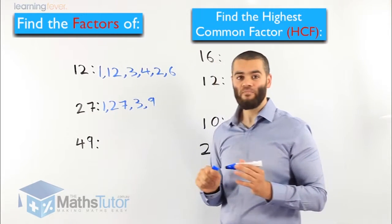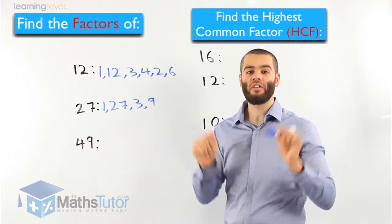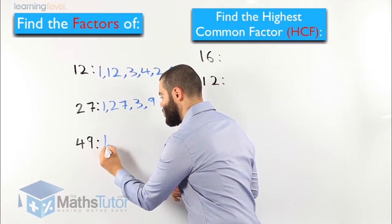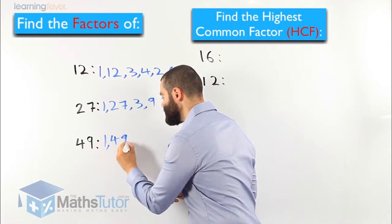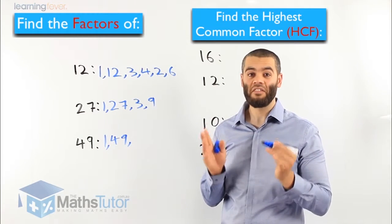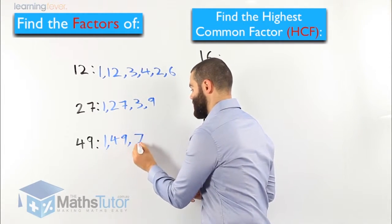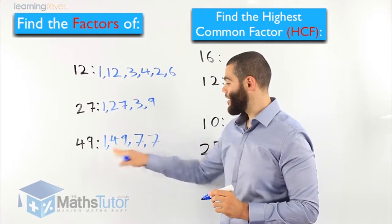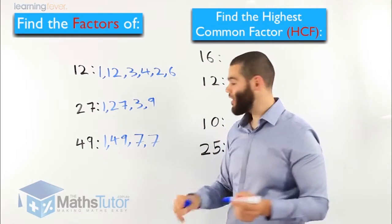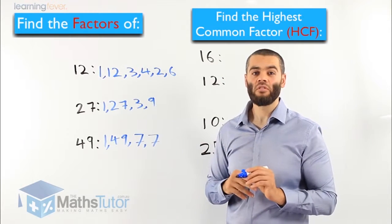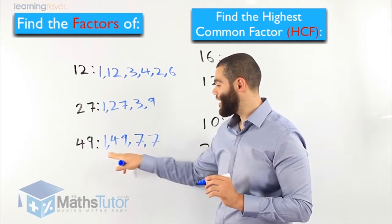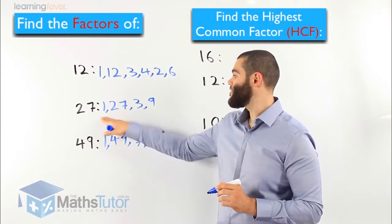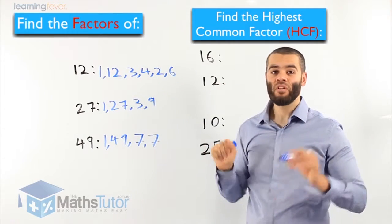Now let's look at 49. What are the factors of 49? The factors of 49 are the numbers that multiply to get 49. We know 1 times 49 is 49, and we also know that 7 times 7 is 49. So the factors are 1, 49, and 7. These are the factors of 49, these are the factors of 27, and these are the factors of 12.